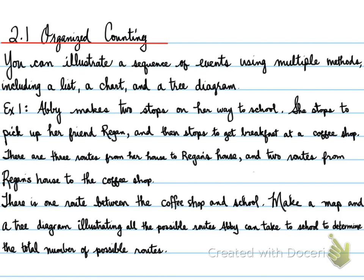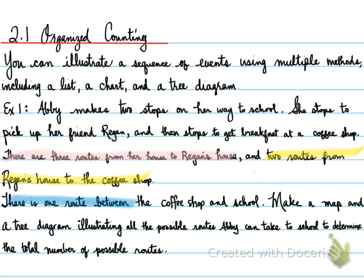We need to take the information that's important. There are three routes from her house to Reagan's house. The next thing is two routes from Reagan's house to the coffee shop. And finally, the last piece of information: there is one route between the coffee shop and school. Basically, we're getting Abby to school using the different routes, and we need to do this two ways — make a map and a tree diagram.